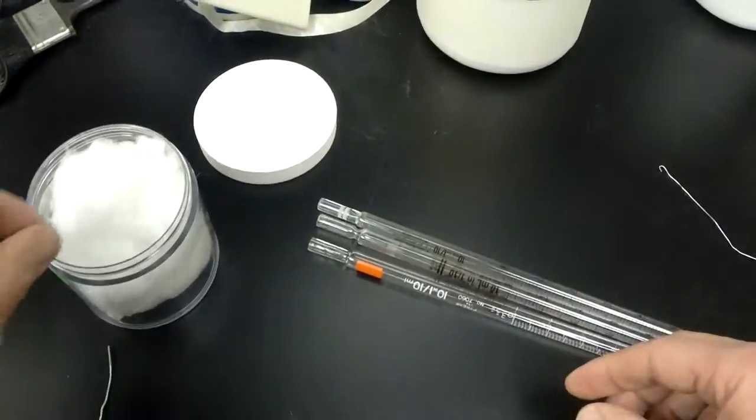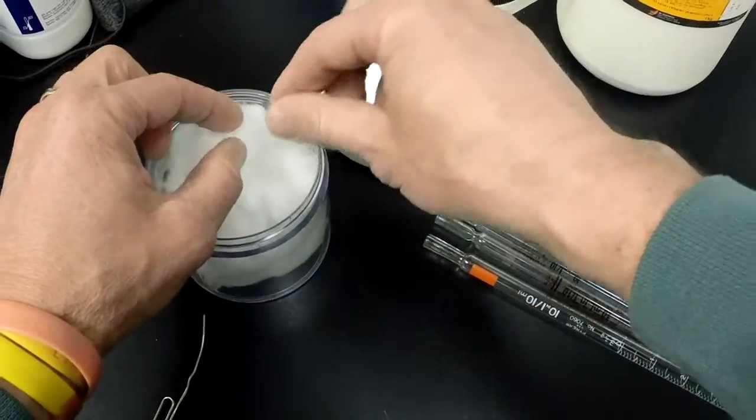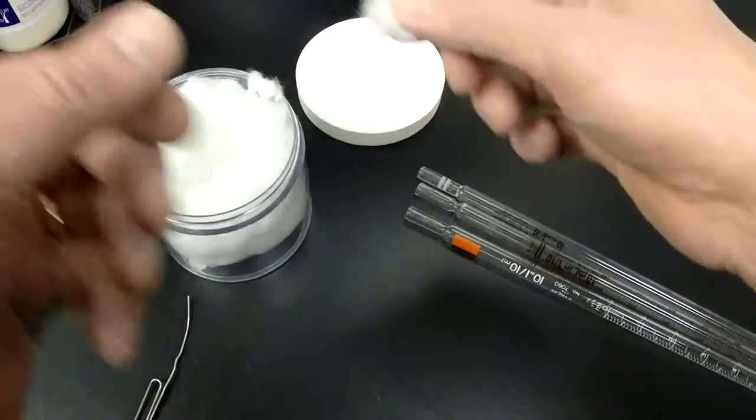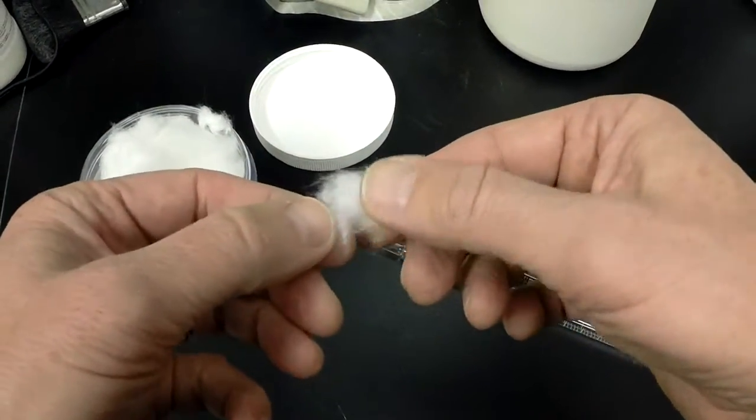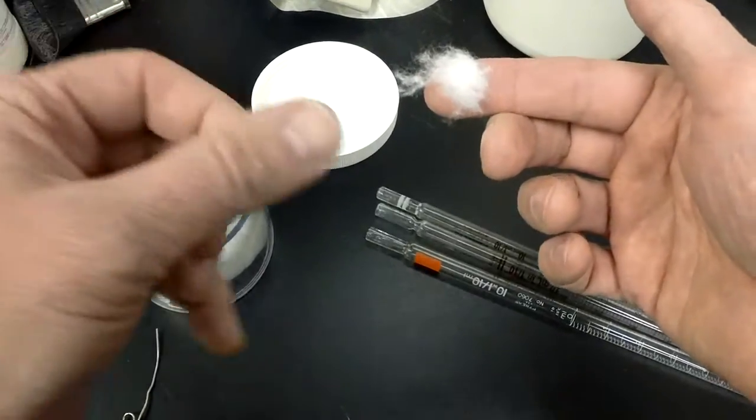The way to think of that is the cotton is being used to absorb it, kind of like in the top of your medicine bottles. You need to take the right amount, which is about this much—about the size of the end of your finger.